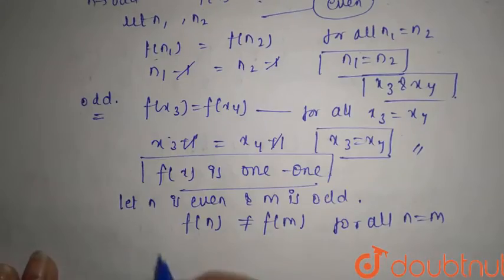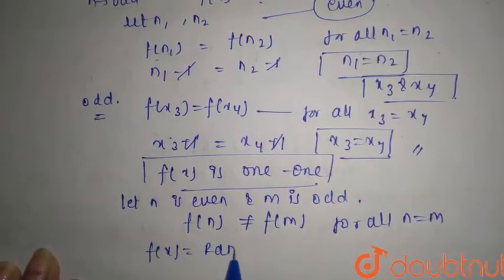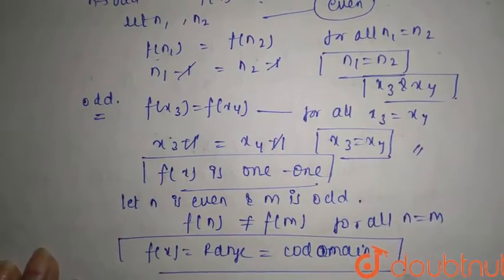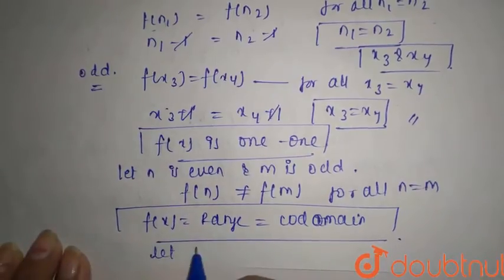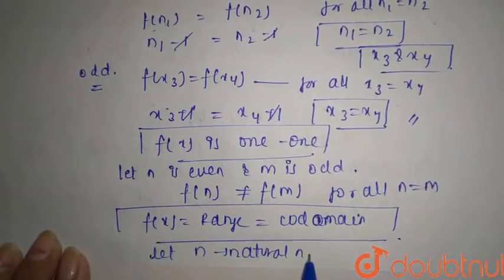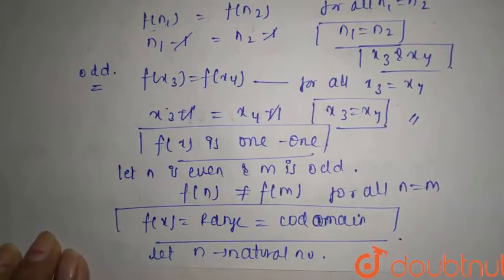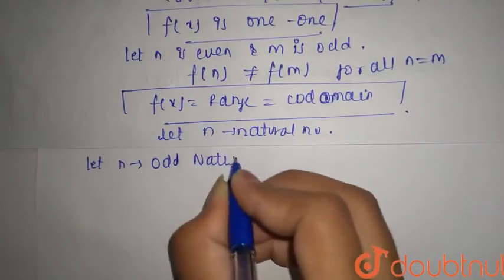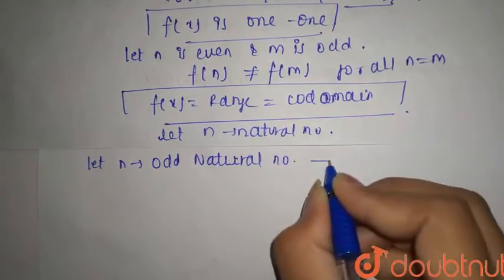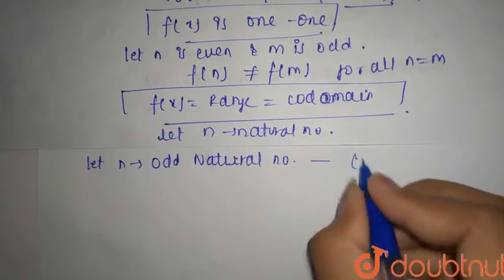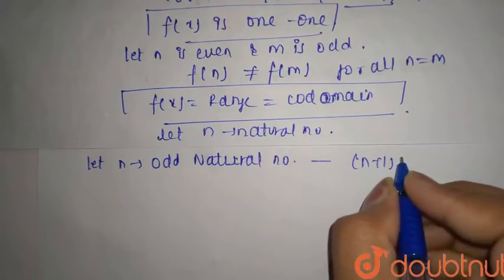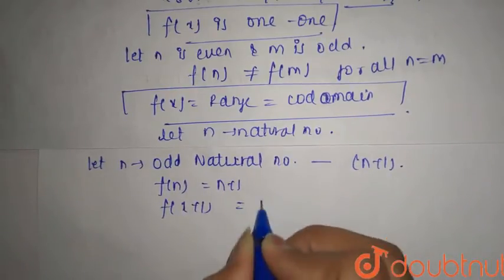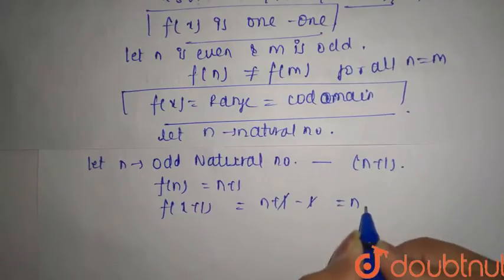Now for onto, the range must equal the co-domain. Let's take n as natural numbers — first odd, then even. Let n be an odd natural number; it has the condition n plus 1, which gives an even natural number. So f(n) equals n plus 1, and f(n plus 1) equals (n plus 1) minus 1, which equals n.